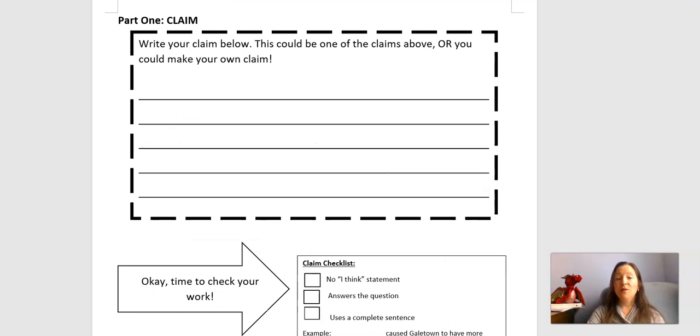The first part of this is where you write your claim. You can use one of the three claims that we went over a little bit ago, or you can write up your own claim. It can be your own ideas. You just want to make sure that you're using this claim checklist so that you're phrasing it correctly. We're not using I think statements. We're making a strong statement. We're trying to answer the question, which is, what's going on with the weather in Galetown?